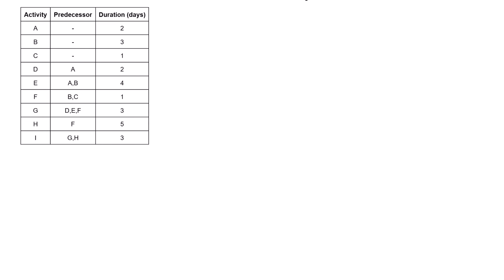When we look at activities A, B, and C, we see all of those have no predecessors. So we're just going to line them up — A, B, and C — on the left side, stacked on top of each other, since there's nothing that comes before those. Then we move on to activity D. Activity D depends on A, so D has to finish after A — just draw an arrow coming out of A to D.